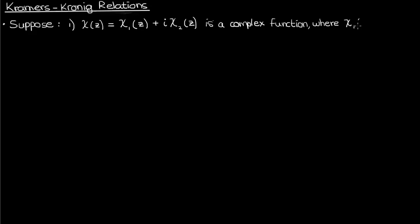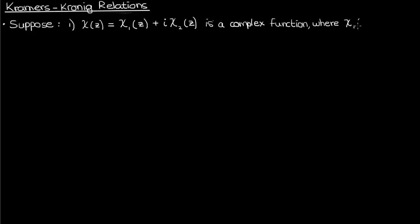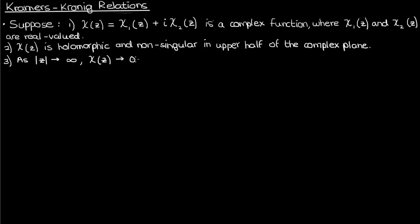In this video I'm going to be deriving some fairly important relations in physics called the Kramers-Kronig relations. Suppose I had a complex function chi composed of the real functions chi1 and chi2 as the real and imaginary parts respectively. Because they're the real and imaginary parts, chi1 and chi2 are real functions, even though they take a complex number as the input they give real numbers in response. Suppose also that chi is holomorphic and non-singular in the upper half of the complex plane, and as the magnitude of z approaches infinity, chi approaches 0 as fast or faster than 1 over the magnitude of z.